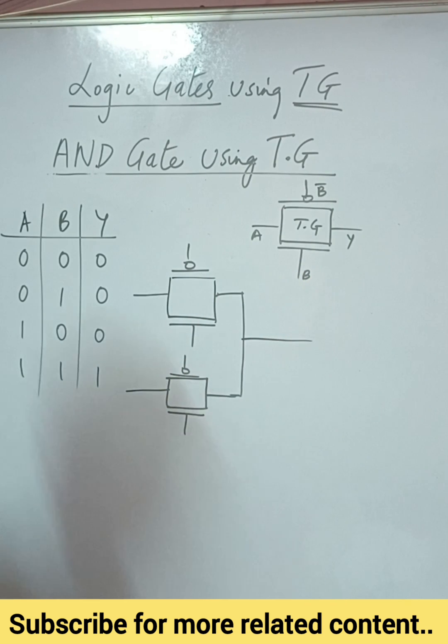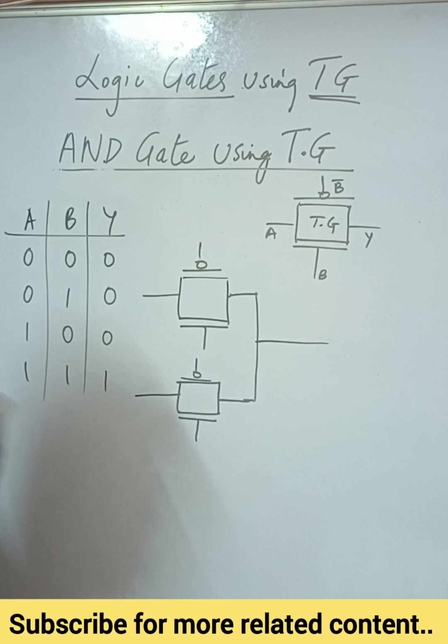Now here you can see this is the truth table of an AND gate. We have to construct an AND gate using the transmission gate. Now how are we going to do that?